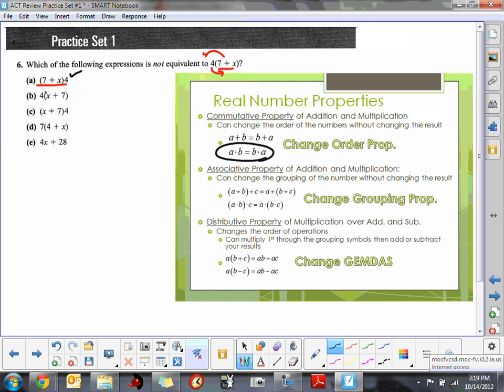The second one, choice B, is 4(x + 7). The only thing they changed is the order of the addition. Again, they're utilizing the commutative property, and we can change the order of addition without changing our outcome. So that property is still in effect, so that one's still good.